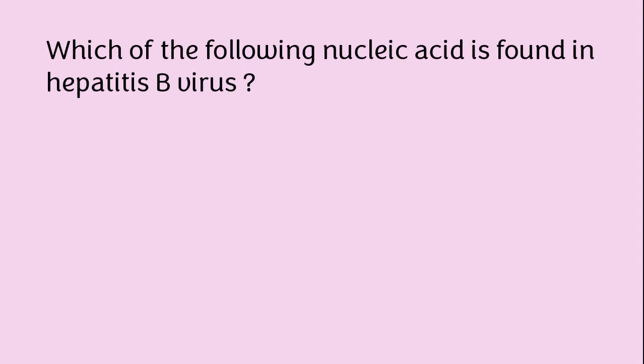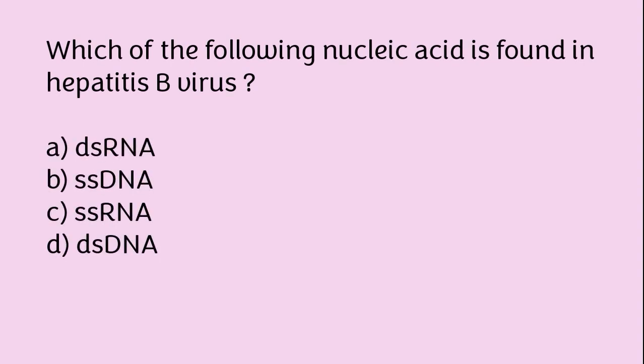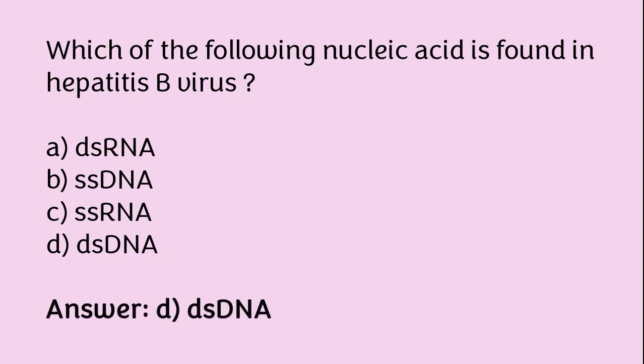Which of the following nucleic acids is found in hepatitis B virus? dsRNA, ssDNA, ssRNA, or dsDNA? The correct answer is option D. dsDNA nucleic acid is found in hepatitis B virus.